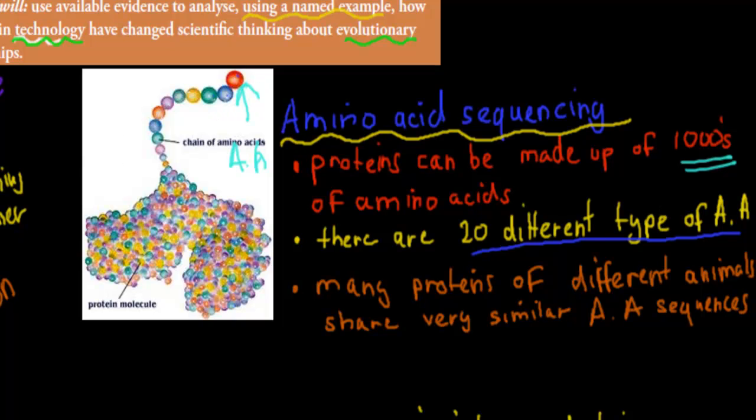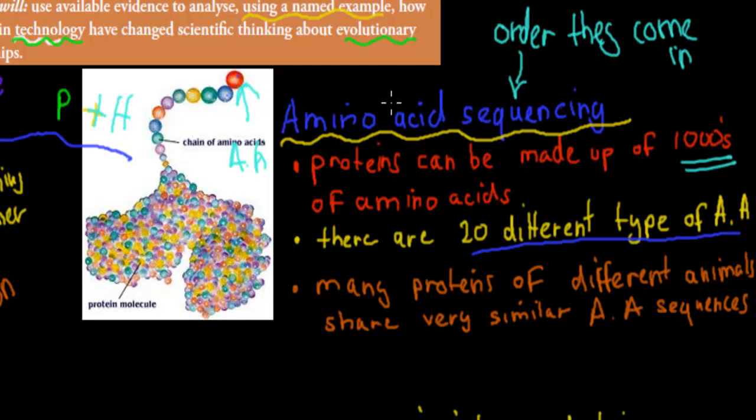So if we look at, for example, if we compare hemoglobin, which is a protein, compare that from a pig and compare that to that of a horse. So what we're doing is we're comparing the structure of that hemoglobin and seeing if these colors are matching up correctly. If the sequence, or amino acid sequencing, sequencing refers to the order they come in. So the order they come in.